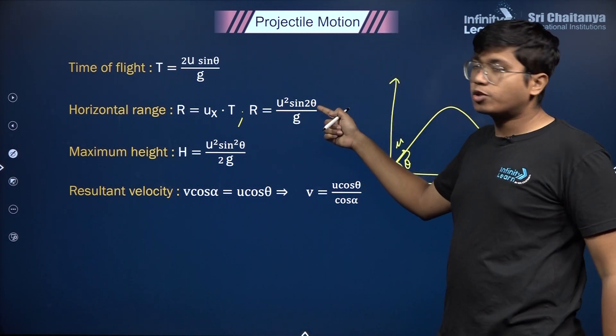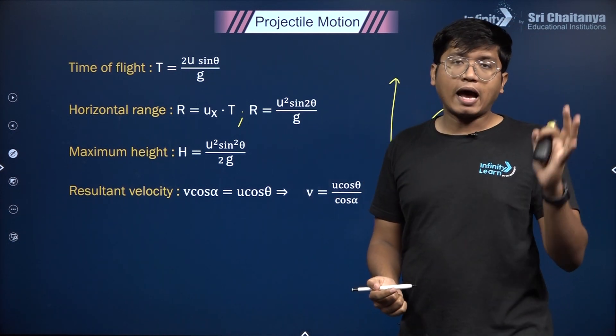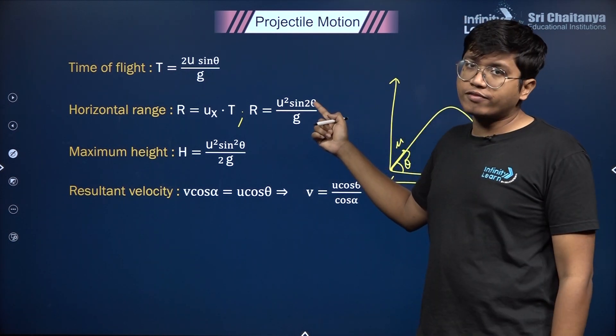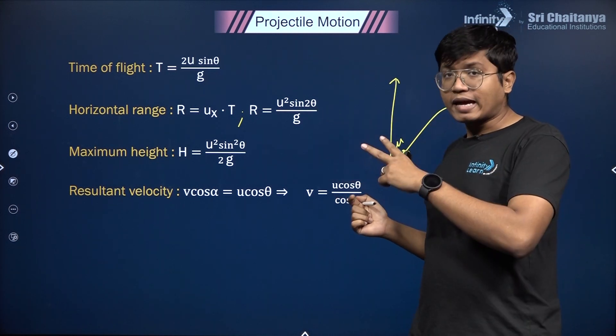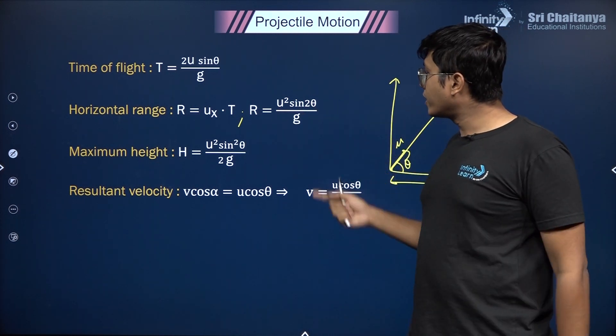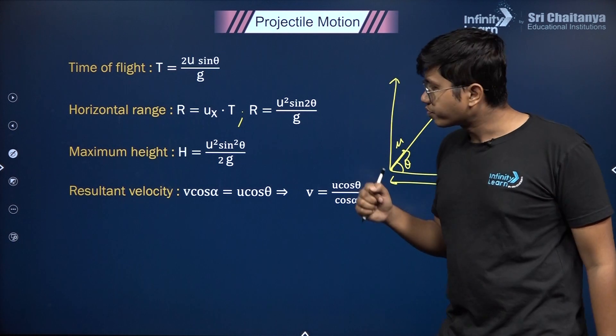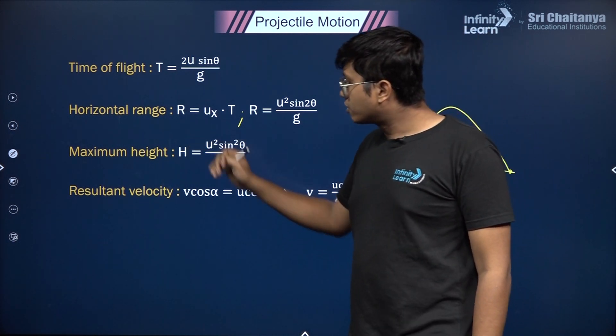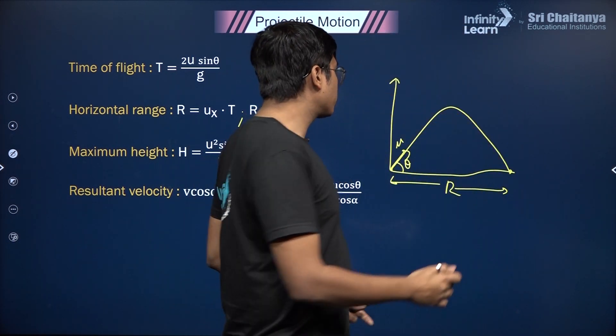It has sine 2θ, which means the maximum range happens at θ = 45°, where 2θ makes it 90°. So maximum range would be u² / g. Next up we have the maximum height H.